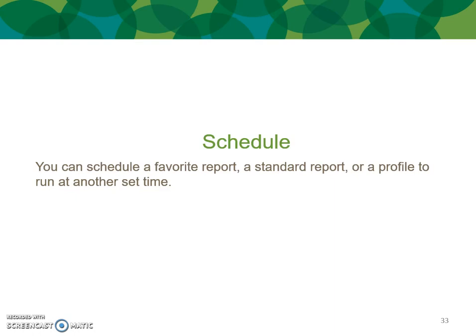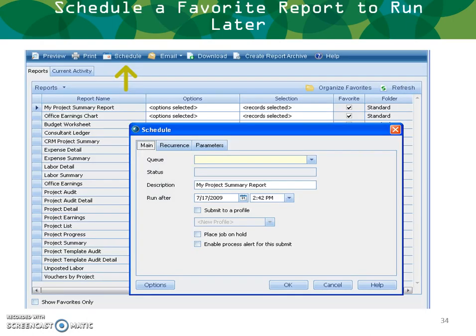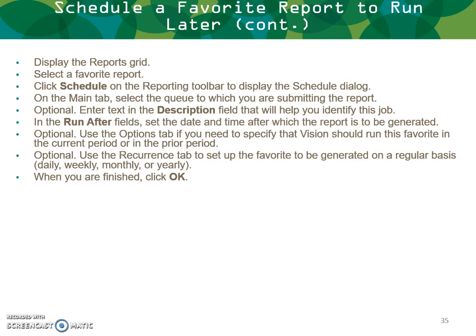You can schedule a favorite report, a standard report, or a profile to run at another time. From the report grid view, click Schedule. You'll see options for main options, recurring options, and parameters. Select a favorite report, click Schedule on the reporting toolbar to display the schedule dialog, then select the queue — queues are set from configuration. Enter a text description to identify the job, and in the Run After field, set the date and time. Use the Options tab to specify running the report in the current and prior period, and use the Recurrence tab to set up daily, weekly, monthly, or yearly generation. When finished, click OK.